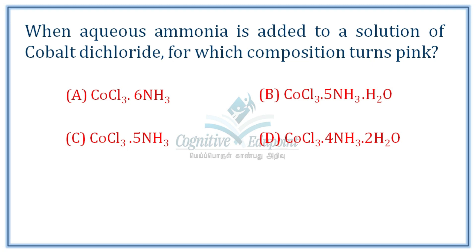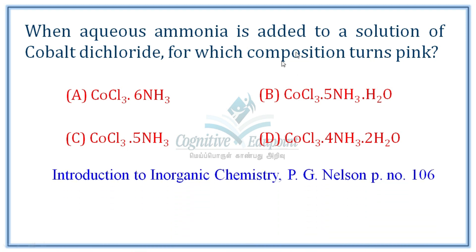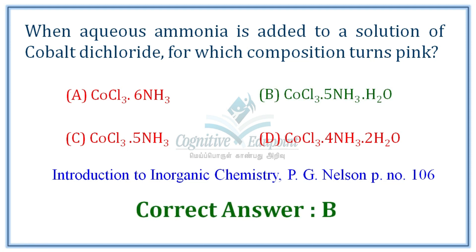The question asks: when aquaammonia is added to a solution of cobalt dichloride, for which composition does the solution turn pink? When cobalt chloride is dissolved in water and ammonia is added slowly, first cobalt hydroxide forms, then further ammonia addition gives various cobalt-ammonia complexes. The composition CoCl₃·5NH₃·H₂O is pink in color. Correct answer is B.